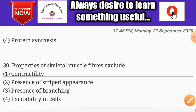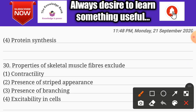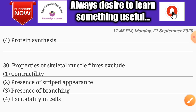Question number thirty: properties of skeletal muscle fibers include — options are contractility, presence of striated appearance, presence of branching, and excitability in cells. The correct answer is option three: presence of branching is the property that is excluded. I hope you loved this video and understood these important bits of botany and zoology.